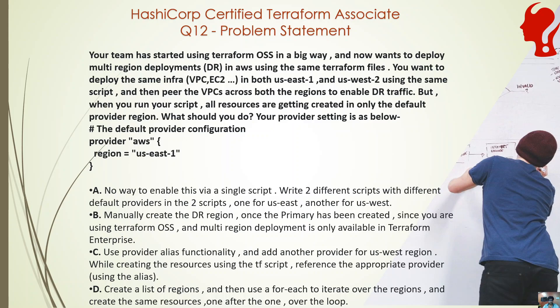Option C is to use provider alias functionality and add another provider for the US-West region. When creating DR resources using the Terraform script, you reference the appropriate provider. You have two providers: one is the default provider AWS for region US-East-1, and another provider with an alias — for example 'dr' — where the region is US-West-2. When you have multiple providers with aliases, if you want to use any provider other than the default, you reference it by its alias.